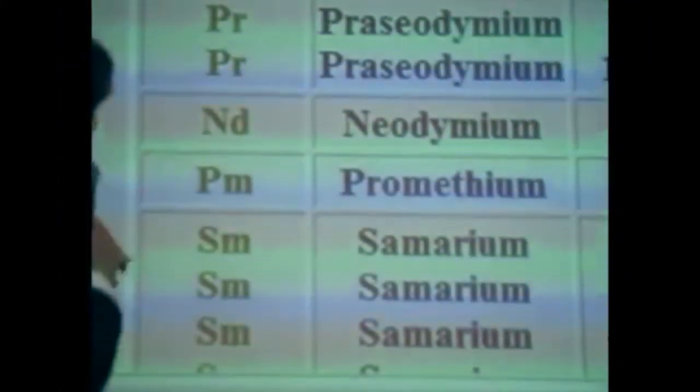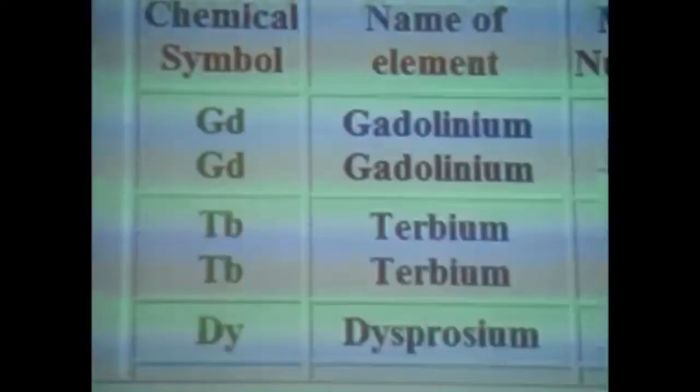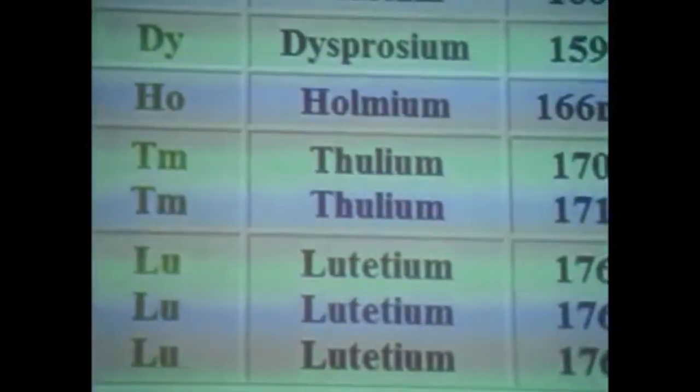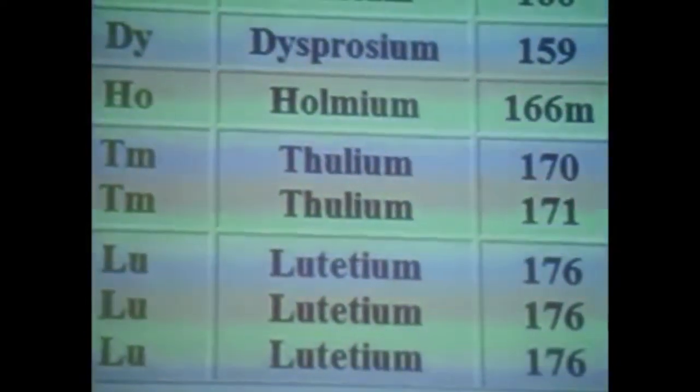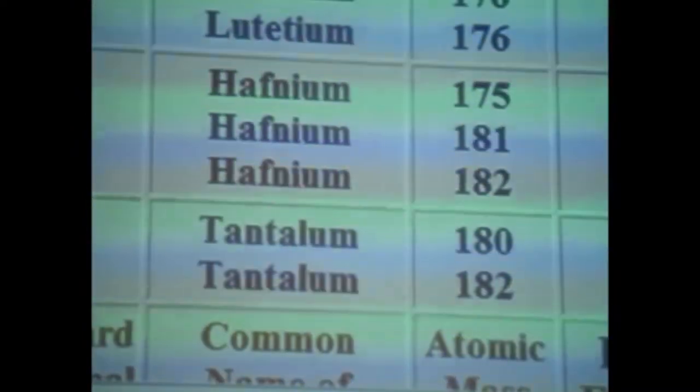We have to have humility and understand who we are and who we're not. We're just fallible human beings who make mistakes — and therefore some say we must eradicate all things nuclear. But consider: neodymium, promethium, samarium, europium, gadolinium, terbium, dysprosium, holmium, thulium, lutetium, hafnium, tantalum, tungsten — physicists named a lot of them after themselves.